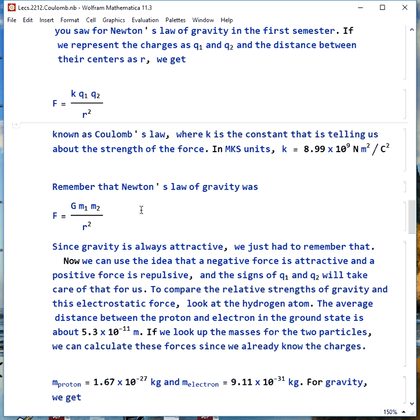We can compare the relative strengths of gravity and this new electrostatic force by looking at the hydrogen atom, where we have a proton and an electron. They attract each other gravitationally, but they also attract each other electrostatically, and we can see which one is more significant.